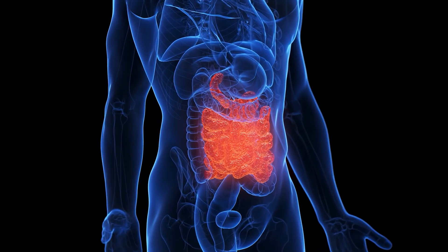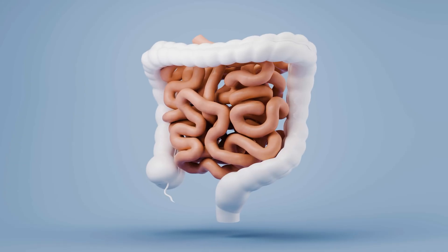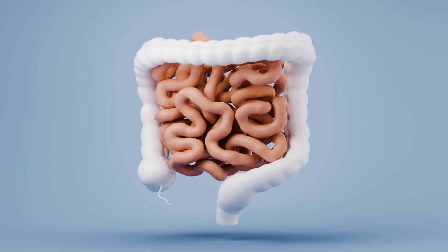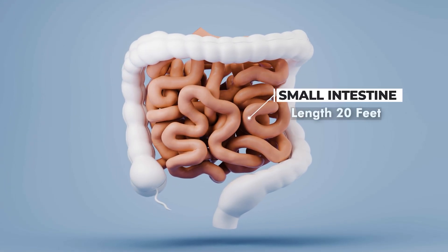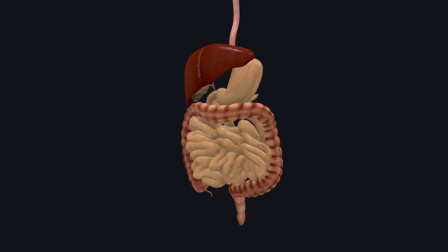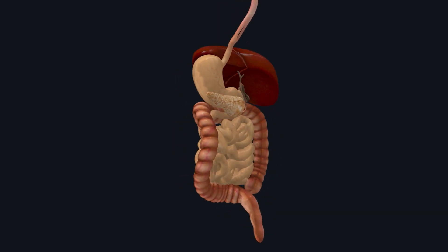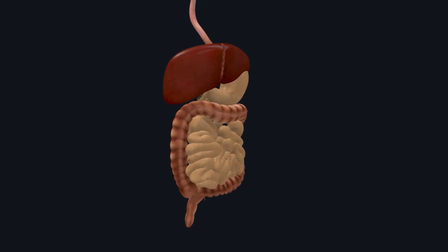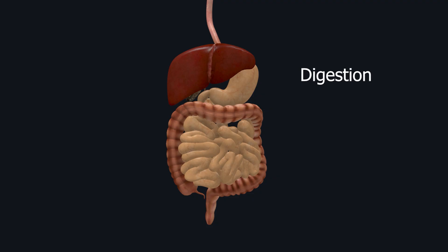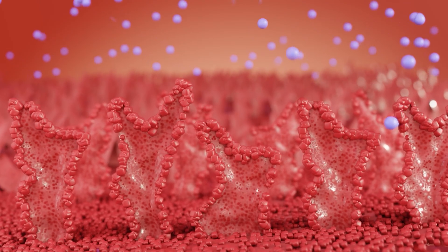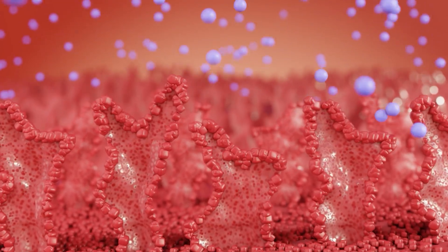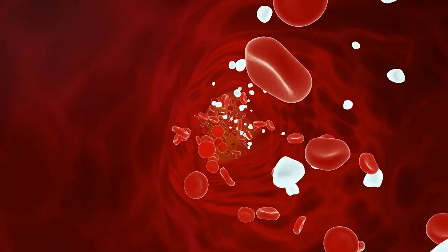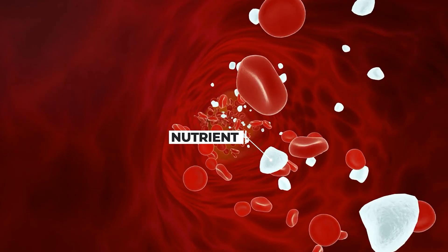The small intestine is a very important part of the digestive system. It looks like a flexible tube and is about six meters (20 feet) long in an adult human, making it much longer than the large intestine, though its smaller diameter gives it its name. The small intestine has two main functions: further digestion of food and absorption of nutrients. About 90% of food absorption happens in the small intestine, where nutrients from food enter the bloodstream.